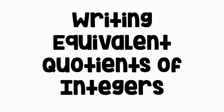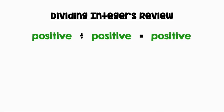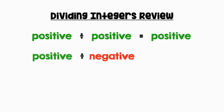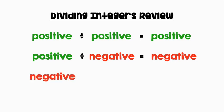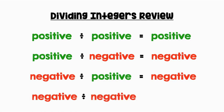Writing equivalent quotients of integers. Let's review our rules for dividing integers. A positive divided by a positive equals a positive. A positive divided by a negative equals a negative. A negative divided by a positive equals a negative. And a negative divided by a negative equals a positive.